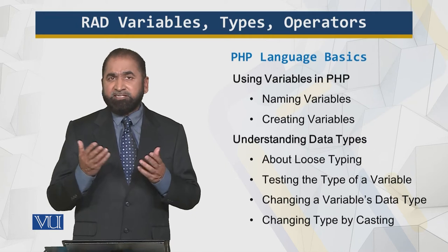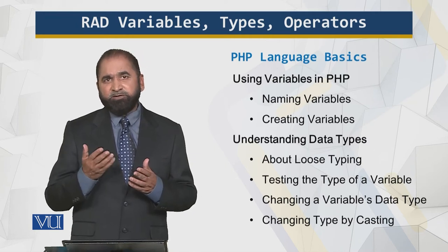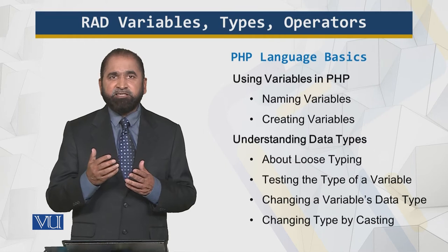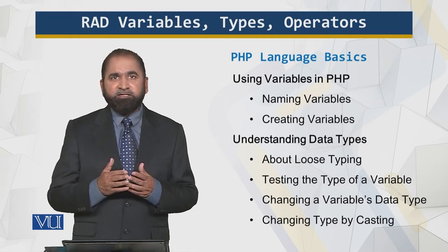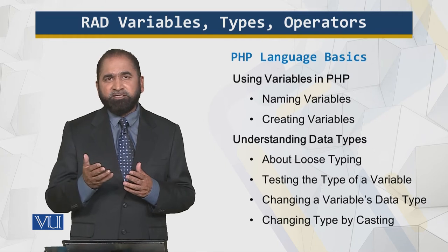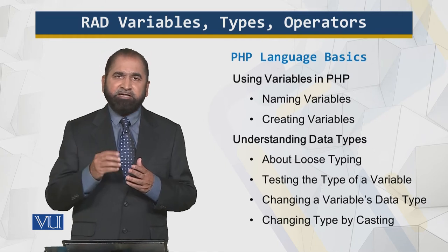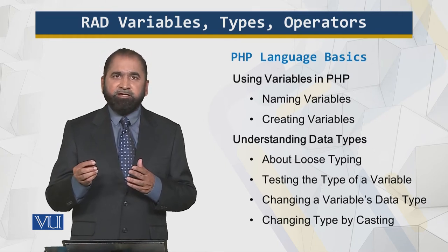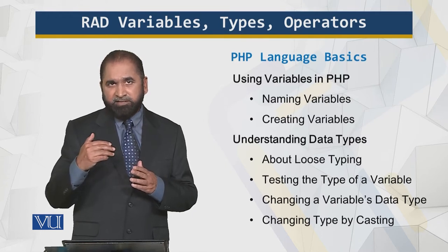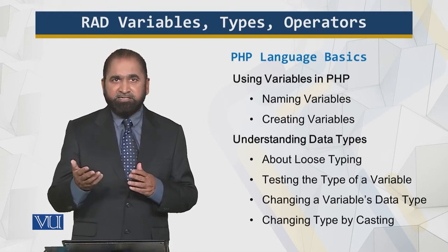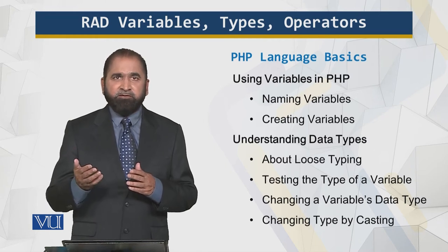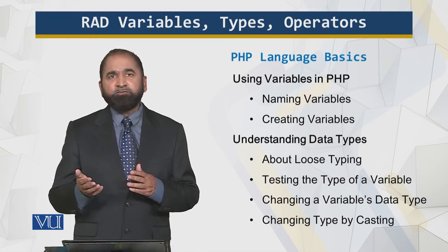So, what is a variable? A variable is like a container. It is called a variable because the contents of that container can change, can vary. The naming convention in PHP is that you put a dollar sign and then write the variable name. Whenever PHP encounters the dollar sign, it understands it is a variable, declares it, and then assigns a type to it.